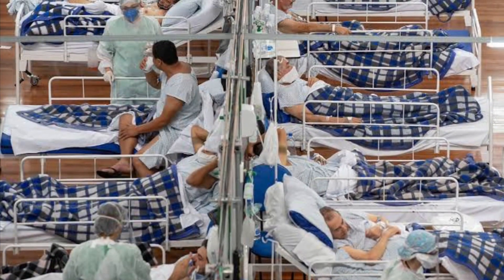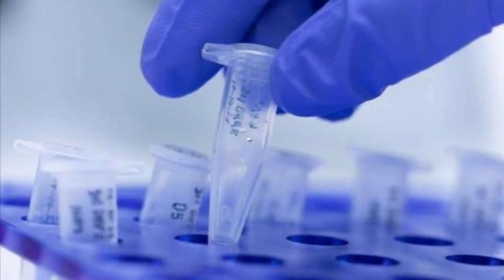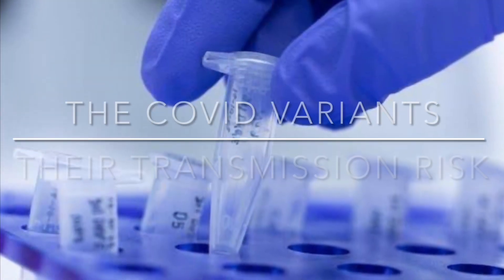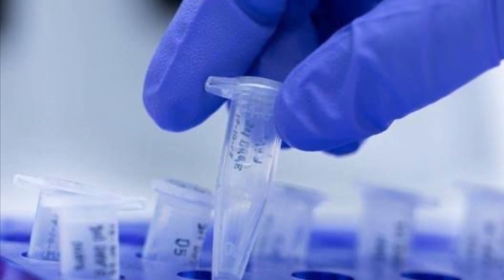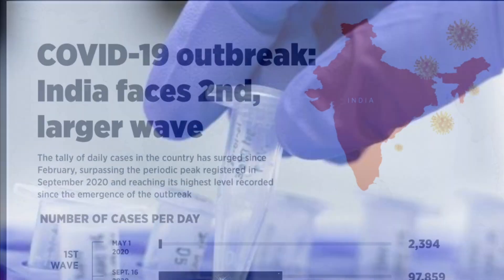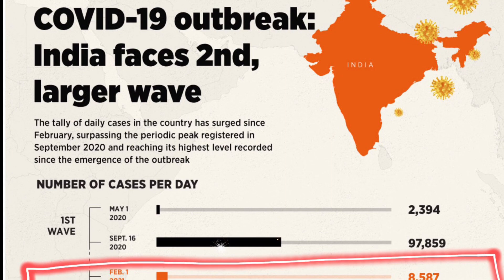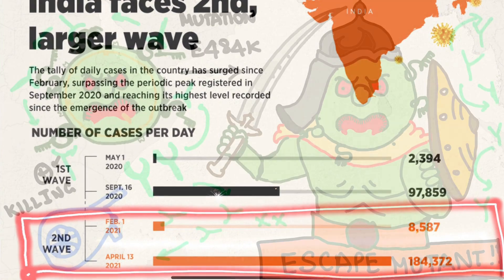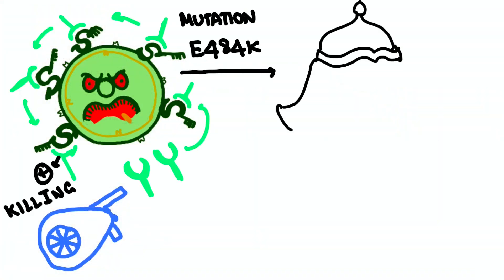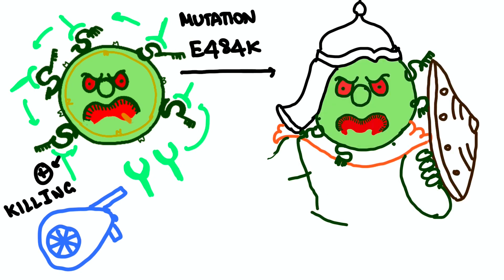What is the reason behind this wave, and what are the so-called COVID variants? How are they formed, and what is their transmission risk? Are these vaccines enough to control this pandemic? Let's see in detail about that in an animated fashion.